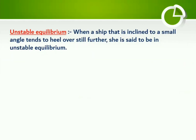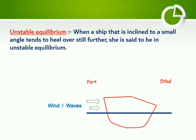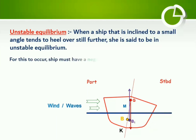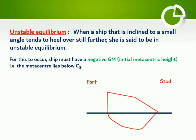Let us now move on to unstable equilibrium. In this case, the ship will not have a tendency to come back to its upright condition by itself after being inclined to some angle. The metacentre is lying below the centre of gravity of the ship, and hence we have a negative value of metacentric height. The ship will be experiencing a capsizing moment which heels the ship further to larger angles.